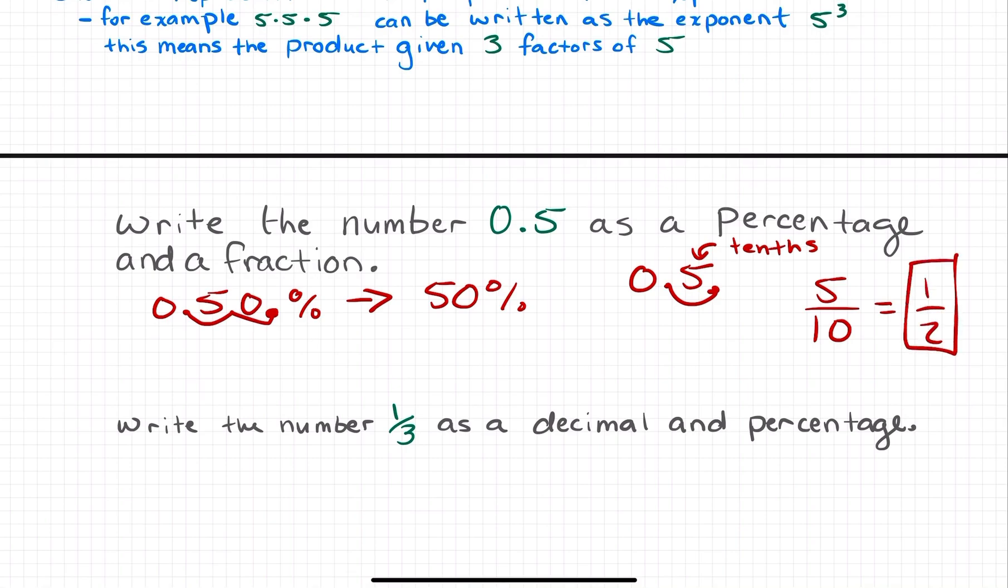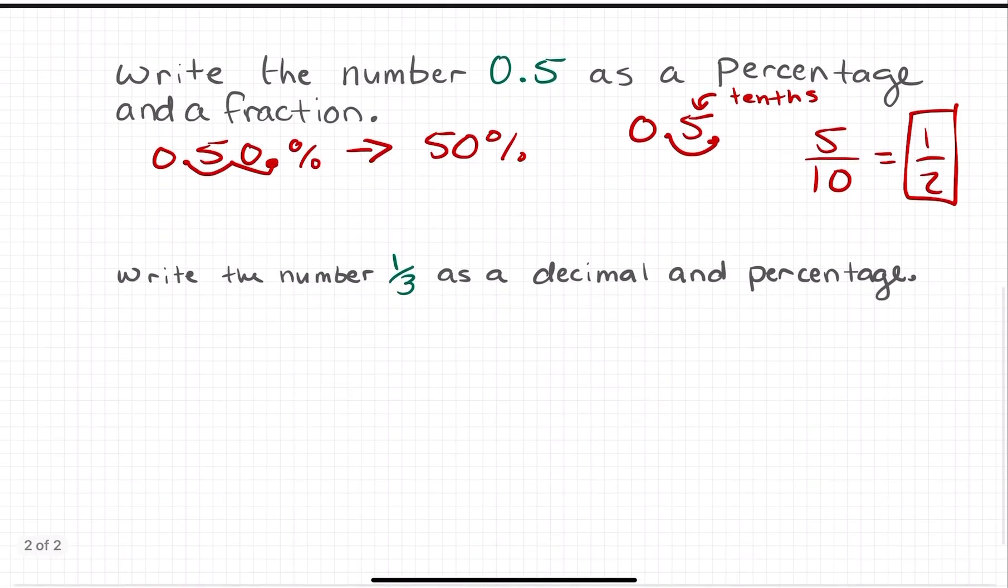That leaves you with 1 over 2. So 1 over 2 is the fraction in most simplified form that is equivalent to 0.5. We'll do one more example at the end. The next question says write the number 1 over 3 as a decimal and percentage.